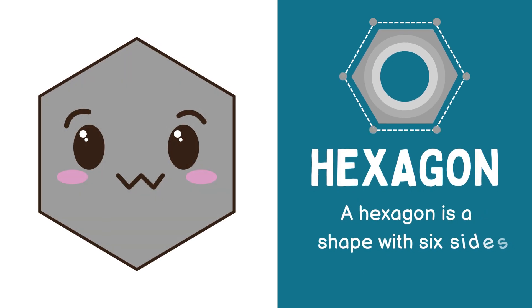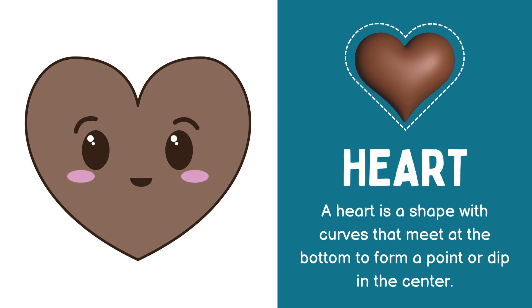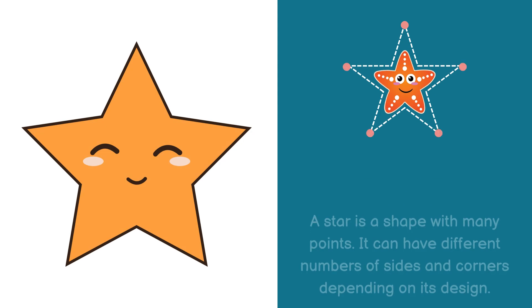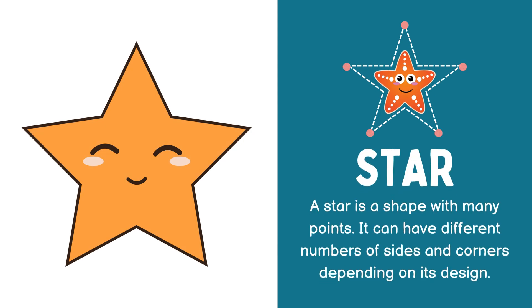Next shape, hexagon. A hexagon is a shape with 6 sides and 6 corners. Next shape, heart. A heart is a shape with curves that meet at the bottom to form a point or dip in the center. Next shape, star. A star is a shape with many points. It can have different numbers of sides and corners depending on its design.